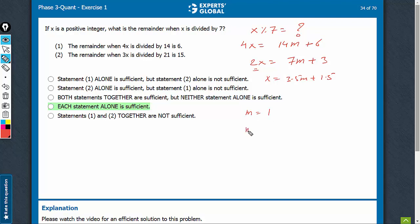So before concluding that statement 1 is not sufficient, you must give it a fair try. Put odd values of m. For m is equal to 1, 2x becomes 7 plus 3, 10. x becomes 5, and the remainder 5 with 7 is 5.